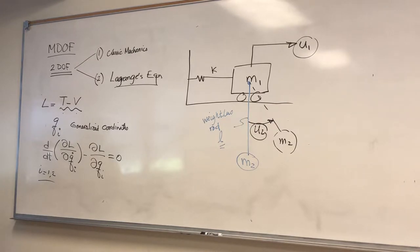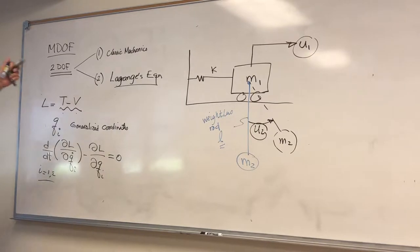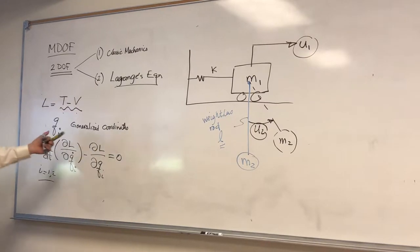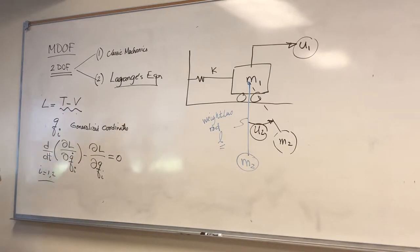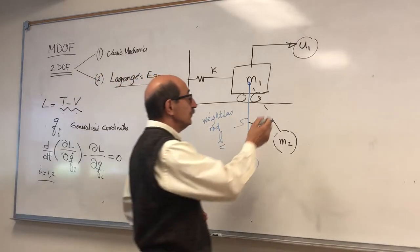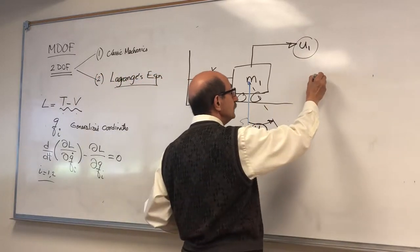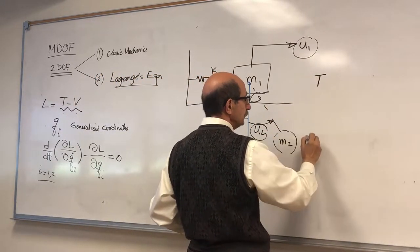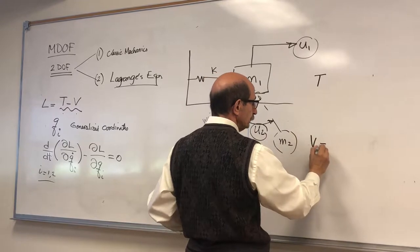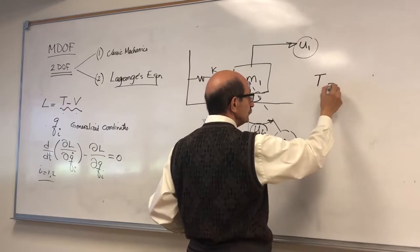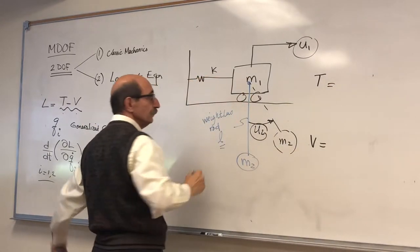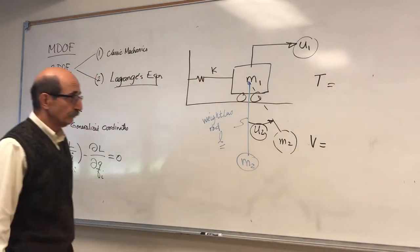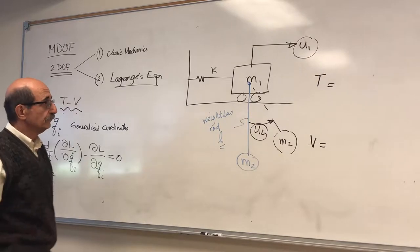For Lagrange's approach, all you have to do is identify the degrees of freedom — which we call the generalized coordinates — and the rest is straightforward. All you have to do is set up the kinetic energy and the potential energy, subtract the two, and apply this equation. So let's do that.